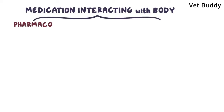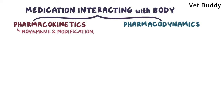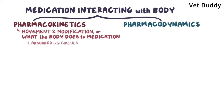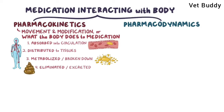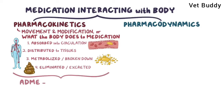Once administered, the medication starts interacting with the body. This interaction can be broken down into pharmacokinetics and pharmacodynamics. Pharmacokinetics refers to the movement and modification of the medication inside the body — in other words, what the body does to the medication. It first has to be absorbed into the circulation, then distributed to various tissues throughout the body, metabolized or broken down, and finally eliminated or excreted into the urine or feces. You can remember this as ADME: absorption, distribution, metabolism, and elimination.